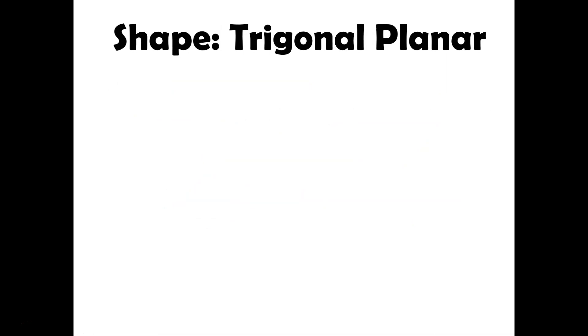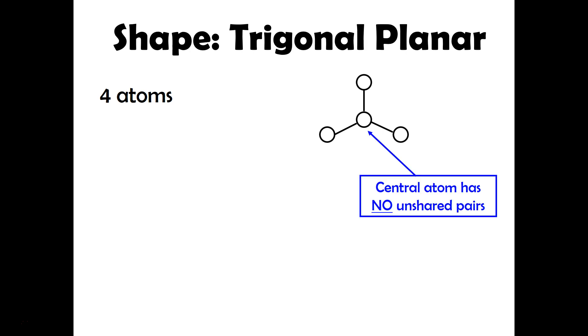Next up is trigonal planar. So this is where you'll have four atoms. And again, in this case, we're going to look at that central atom. And as soon as you look at the central atom, you can see that it has no unshared pairs. So that's going to be an indicator if you've got three bonded atoms and no unshared pairs. That's trigonal planar.